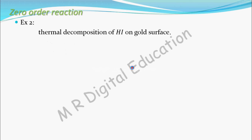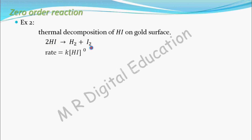Another example is the thermal decomposition of HI on a gold surface. On heating, HI decomposes: 2HI gives H2 plus I2. The rate equation for this reaction is rate equal to K multiplied by the concentration of HI to the power 0. Since the power is 0, the order equals 0.